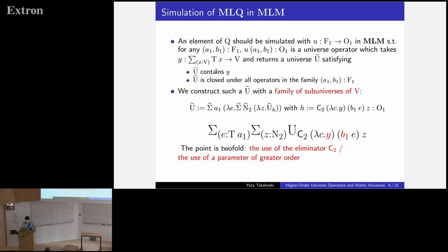We construct such a U tilde as a family of sub-universes of V. And here is a definition, but let me continue the informal explanation. We construct such a U tilde as this family of sub-universes. These sub-universes are formed by reflecting this operator. The point is twofold: the use of the eliminator for Boolean type.